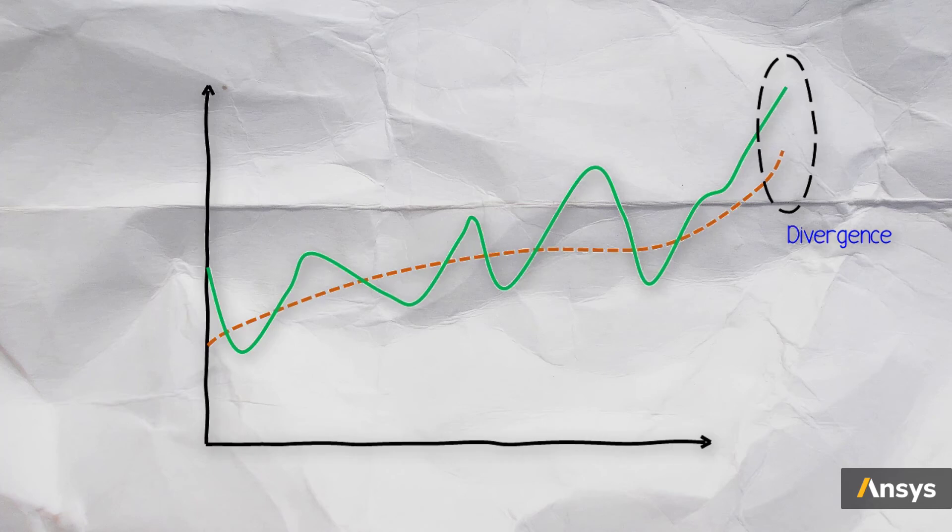This point of divergence will be used as a way of gauging the point of buckling. The applied load is incremented to the point where the solution starts diverging, and this load is nothing but the buckling load.